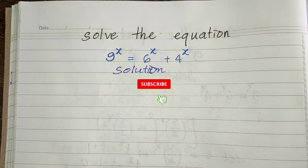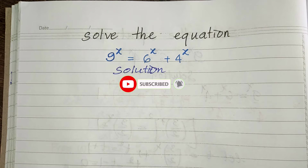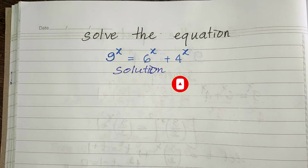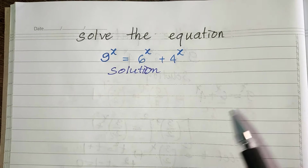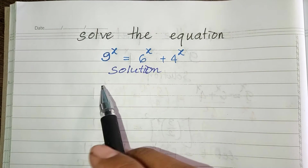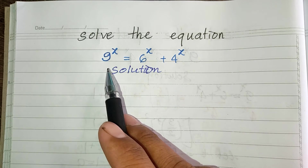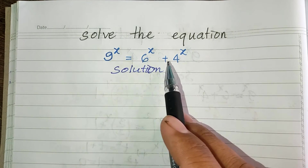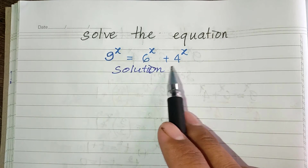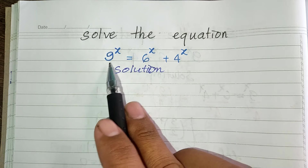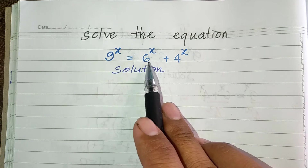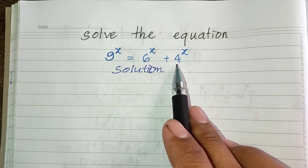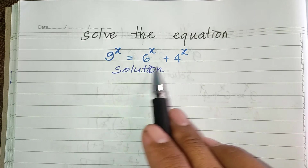Before we go to the solution, please don't forget to subscribe to my channel for more exciting videos. Okay, now we go to the solution together. This is an exponential equation that has different bases: 9, 6, and 4.